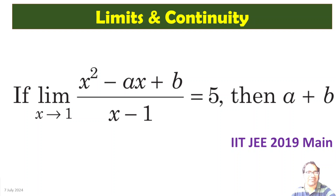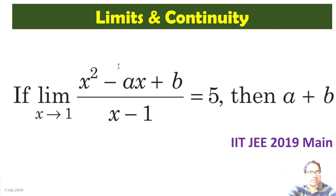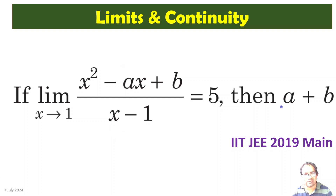Since in this limit, we are given x tends to 1 and (x² - ax + b) / (x - 1) is equal to 5, then what is a + b?